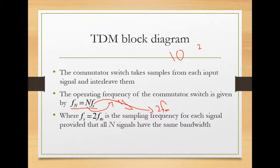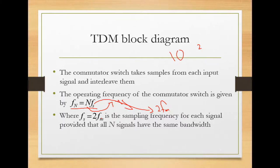If the N signals have different bandwidths, Fs is selected as the sampling frequency of the signal with the highest frequency content. If signals with different bandwidths are to be TDM multiplexed, the signals with the same bandwidths are grouped together and sampled at the same Fs. For example, if three signals share one bandwidth and another three share a different bandwidth, group them accordingly and apply multiplexing based on the maximum frequency within each group.